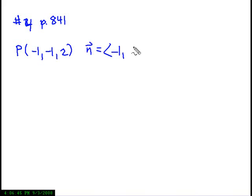As an example of how to use the point normal form of a plane, this is number 4 from page 841 in your textbook. It says find an equation of the plane that passes through the point P, and the point P is (-1, -1, 2), that is normal to the vector N equals (-1, 7, 6).